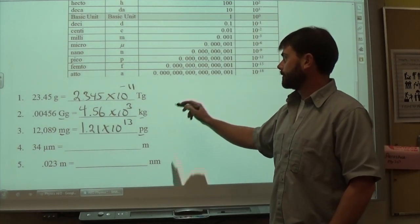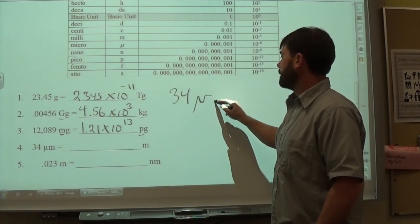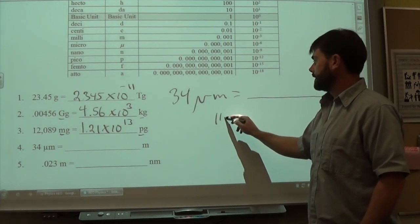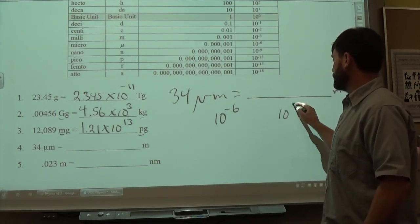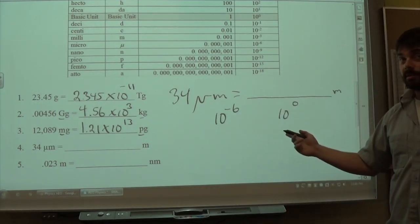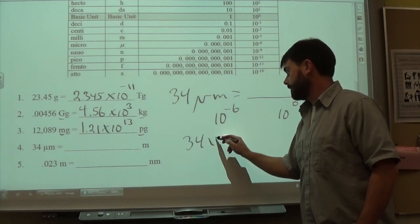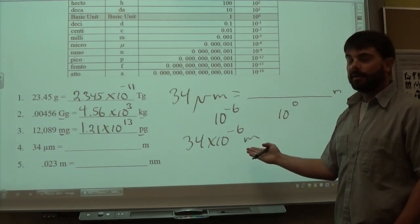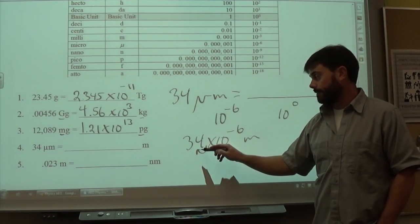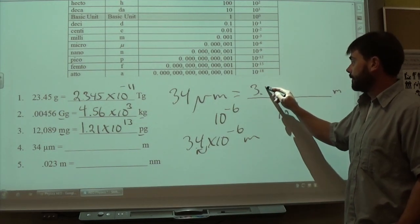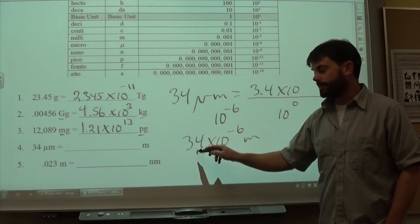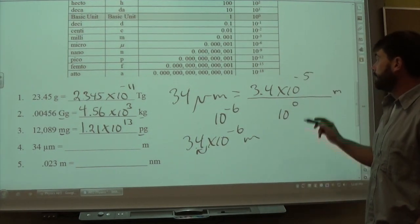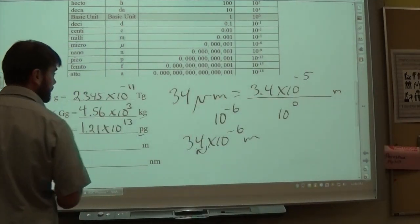For 34 micrometers to meters: micro is 10 to the negative 6th, and meters is the base unit at 10 to the 0. Subtracting: 0 minus negative 6 equals positive 6, so you get 34 times 10 to the negative 6th meters. Moving the decimal back one place gives 3.4, and since you made it smaller by one factor of 10, you add 1 to negative 6, giving negative 5. Final answer: 3.4 times 10 to the negative 5th meters.